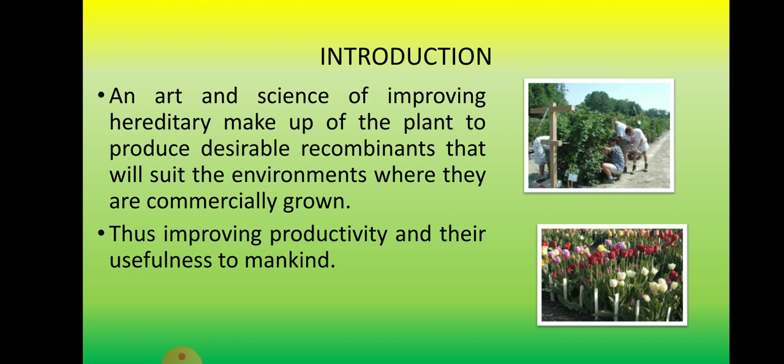Plant breeding is an art and science of improving the hereditary makeup of the plant. We are obtaining certain genes which make the character trait of a certain species. For example, we want resistant genes to be passed through to the next generations of a crop. The aim of hybridization is to improve productivity and usefulness to mankind, producing desirable recombinants, since most good traits are dominant.